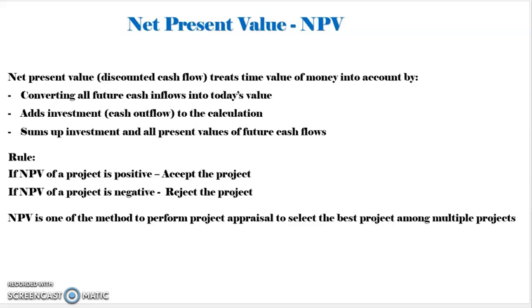Let me give you a brief introduction about Net Present Value. NPV, also called discounted cash flow, takes the time value of money into account by converting all cash inflows into today's value. It also adds the investment — which is a cash outflow — to the calculation and sums up the investment and all present values of future cash flows. The rule of NPV is: if NPV is positive, accept the project; if negative, reject the project.